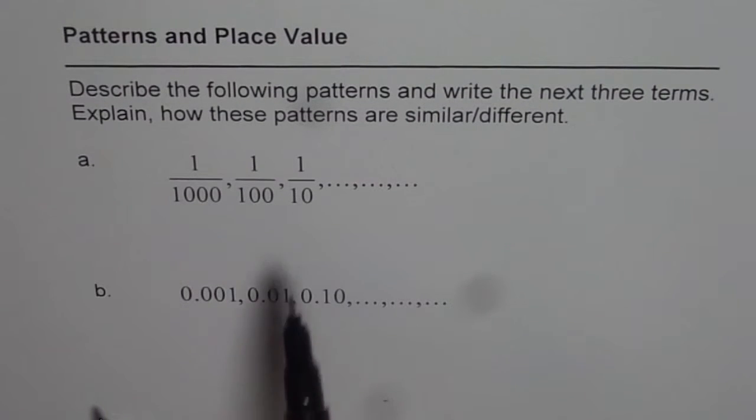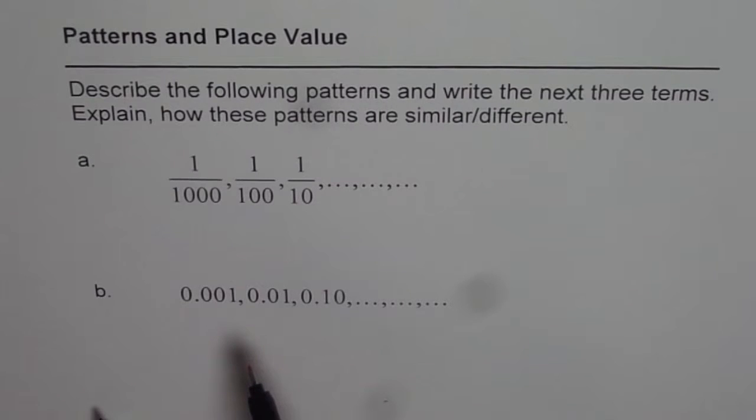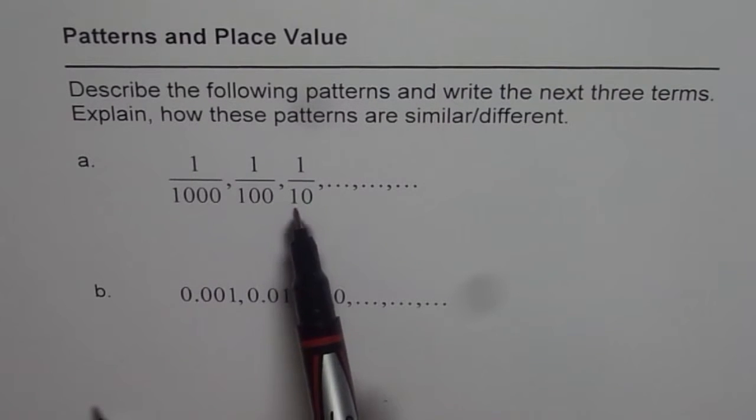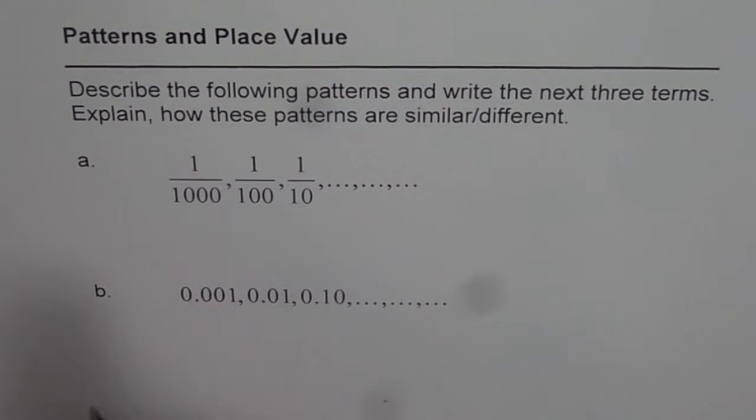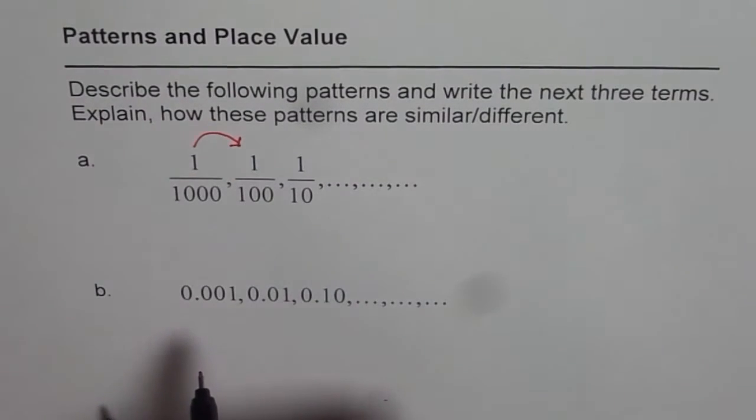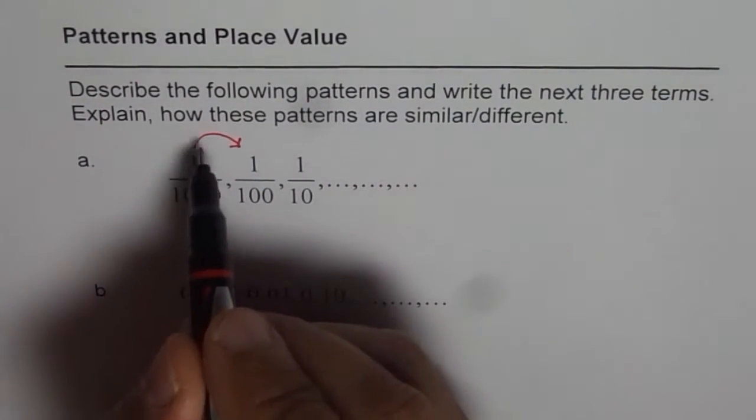Now you have to complete these patterns and then describe them. So the first one is 1/1000, 1/100, 1/10, what comes next? As we go from left to right, what are we trying to do? We are trying to multiply by 10.